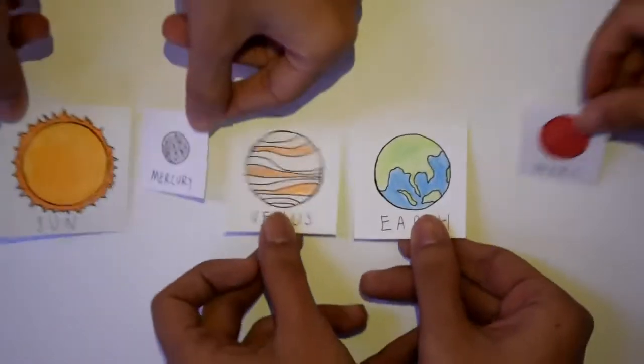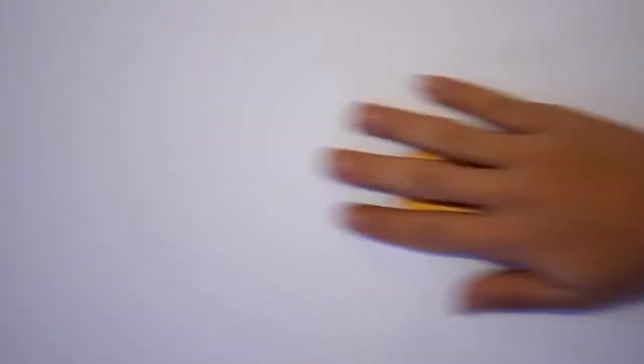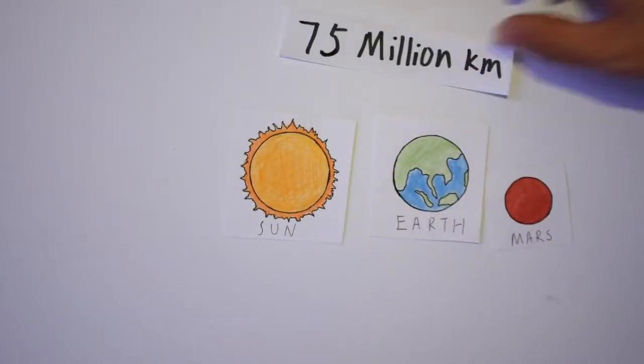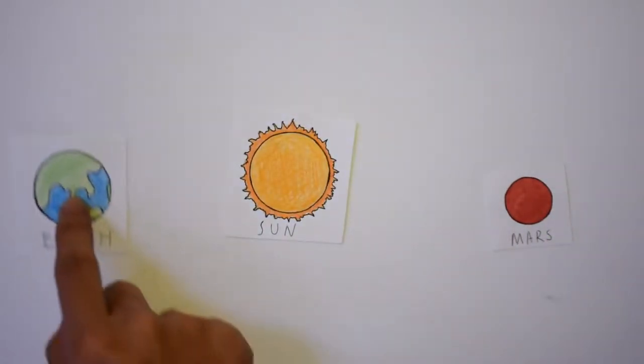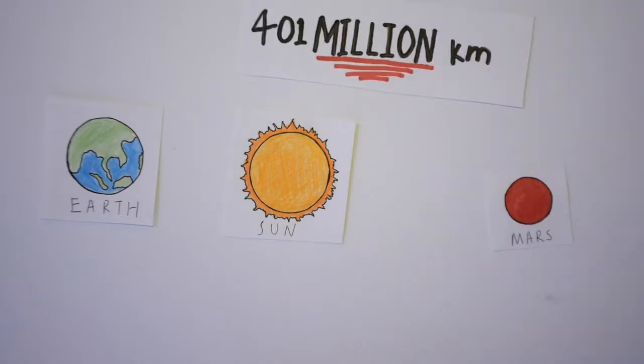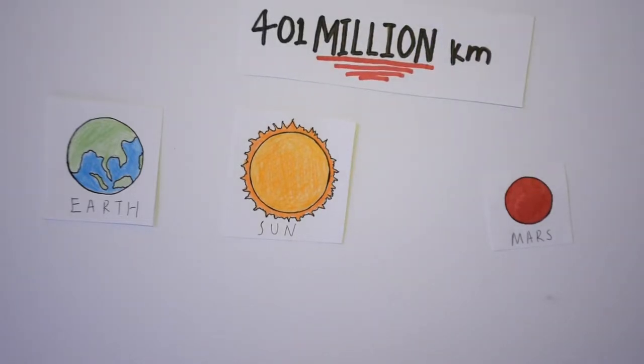Well, Mars is the fourth planet from the Sun, with a distance of about 75 million kilometers away from us at closest and 401 million kilometers at the furthest, averaging about 225 million kilometers.